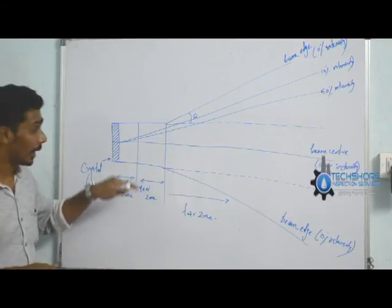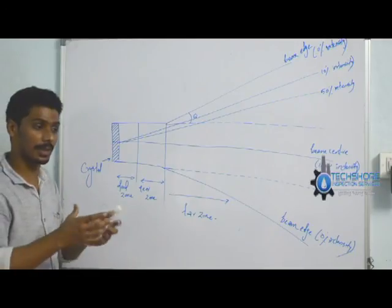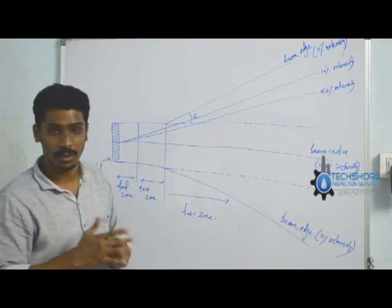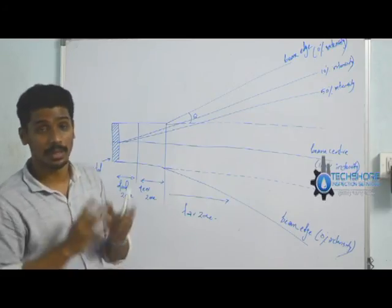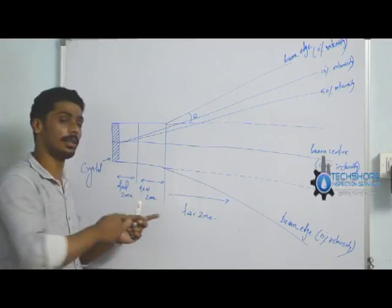...that any defects inside the near zone will show sometimes as a bigger defect or larger defect. Sometimes if you measure that you can see it as a very small defect. So you will get confused about defects inside the near zone area.